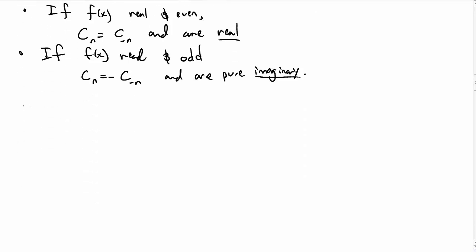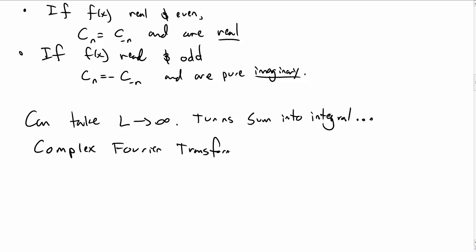Okay, from this, it's easy to go to the idea of the complex Fourier transform, because we can just take L, go to infinity, and then, as before, with Fourier transforms, it turns our sum into an integral. And so we call this the complex Fourier transform, where we write f of x is 1 over the square root of 2 pi, integral from negative infinity to infinity, f hat of w, e to the i w x d w.